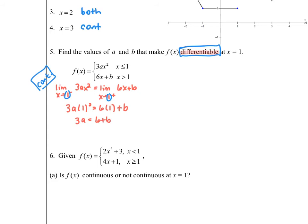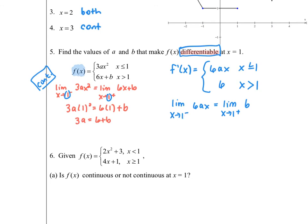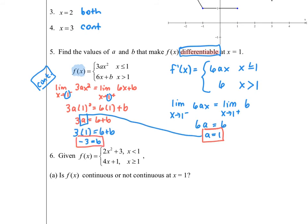All I've done so far is address the continuity of the function. To make it differentiable, I have to also handle the differentiability piece. First, I find f prime by taking the derivative of each piece of the piecewise function. Then I ensure that the slope approaching from the left of x equals one transitions smoothly into the slope from the right — so the left-hand derivative limit equals the right-hand derivative limit. Evaluating gives a equals 1. Substituting back into the continuity equation gives b equals negative 3.